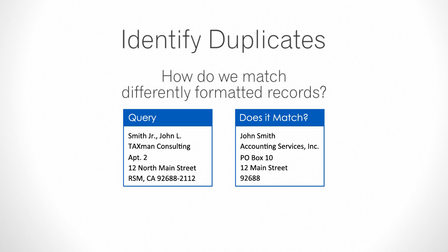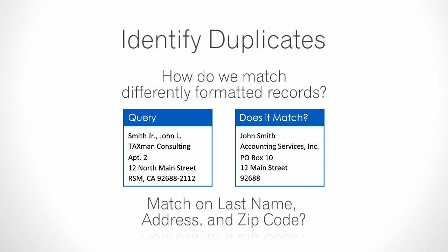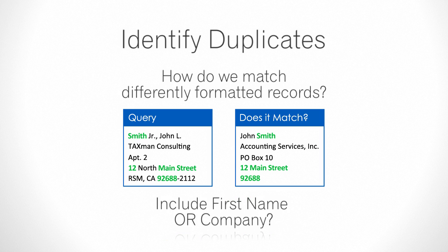By determining a matching strategy. For example, do I want to match on last name, address, and zip code? Or perhaps include a first name or a company in my match rules? These rules are called a match code.